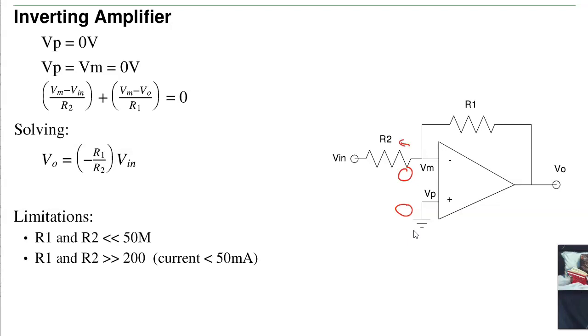Then the current, current left, plus the current right, add to zero. Gives you three equations, three unknowns, solve. Solve, we get minus R1 over R2.